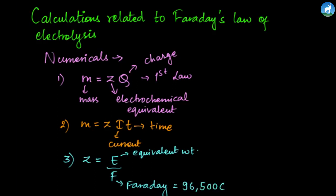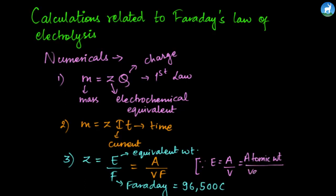We can further modify this formula. Z equals E by F, which can be written as A by VF, where A is atomic weight and V is valence. This modified formula — M equals A by VF into Q — is used to solve Faraday's Law of Electrolysis related numericals.